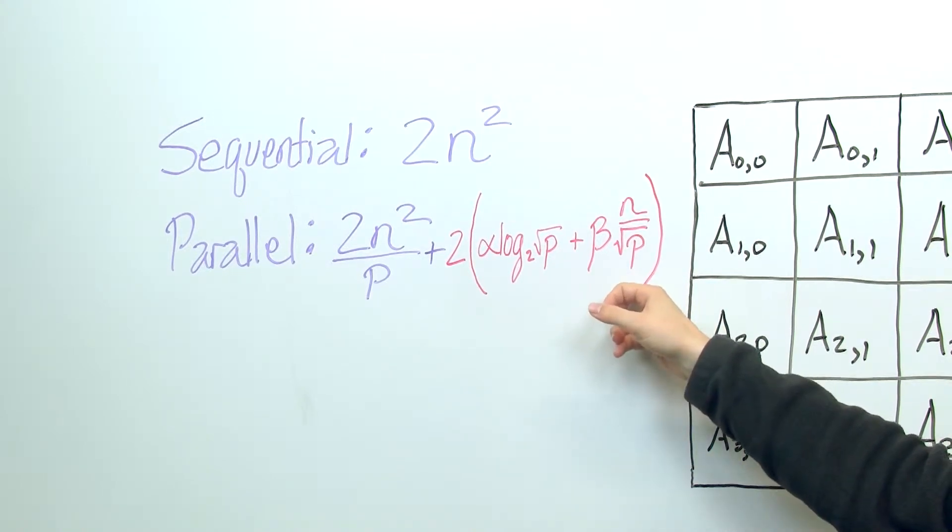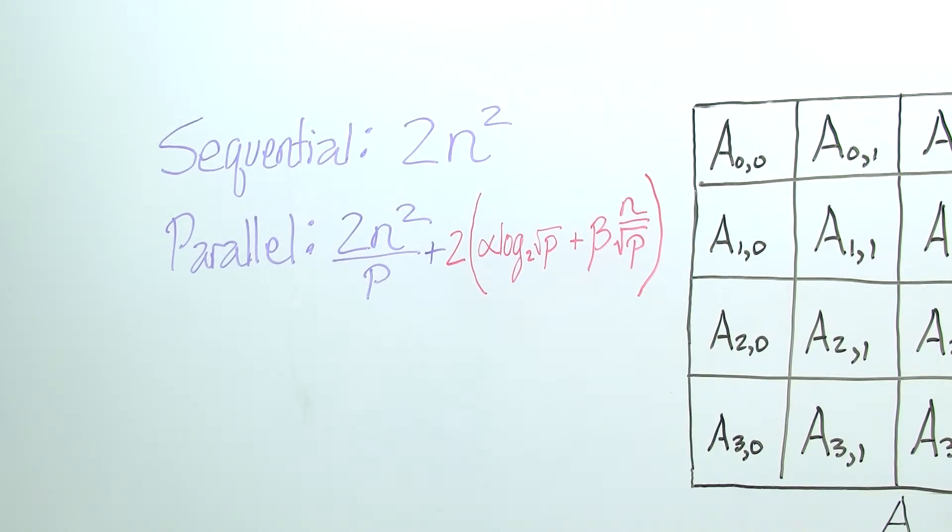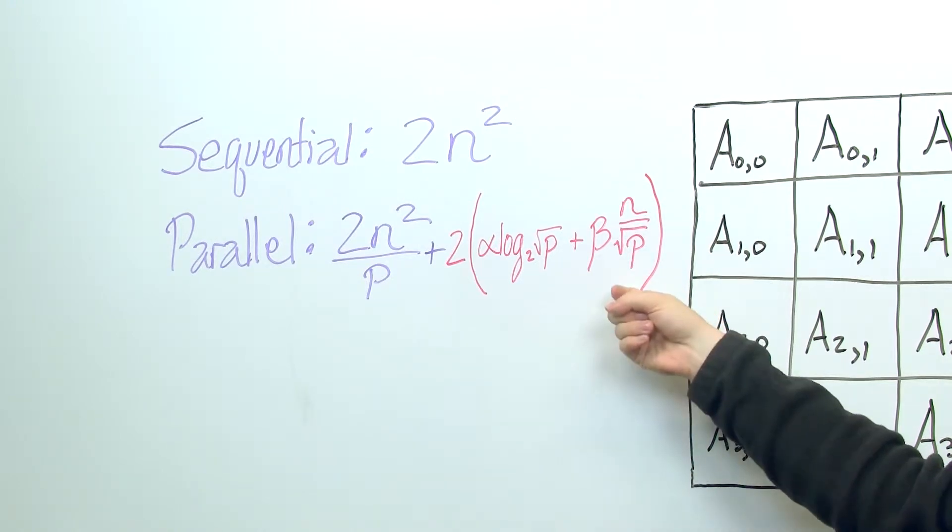Okay, so what's important to note is that there's a root p here. So n is divided by root p. So as we increase the number of processes, the total amount of data that gets sent over the network continues to decrease.